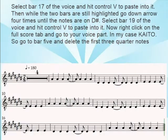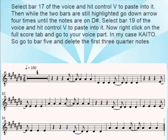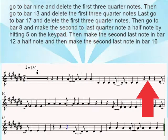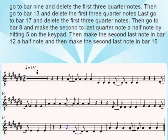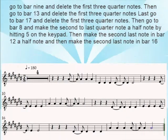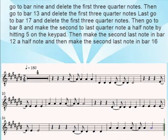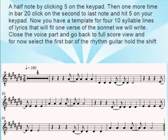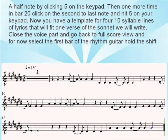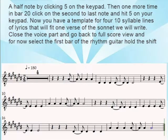Right-click on the Full Score tab and go to your voice part — in my case, Kaido. Go to bar 5 and delete the first three quarter notes. Go to bar 9 and delete the first three quarter notes. Then go to bar 13 and delete the first three quarter notes. Then go to bar 8 and make the second-to-last quarter note a half note by hitting 5 on the keypad. Do the same for the second-to-last note in bars 12, 16, and 20. Now you have a template of four ten-syllable lines of lyrics that will fit one verse of the sonnet.